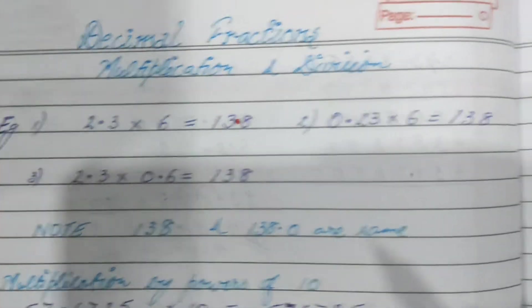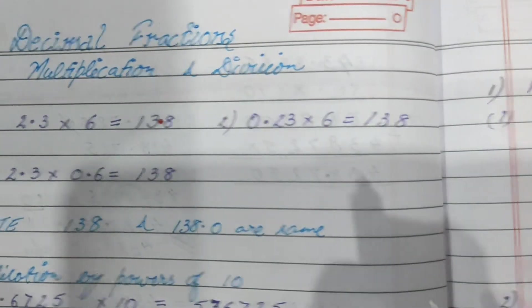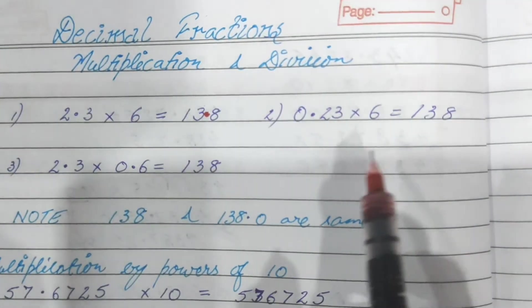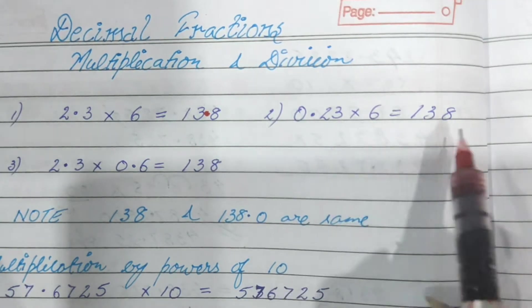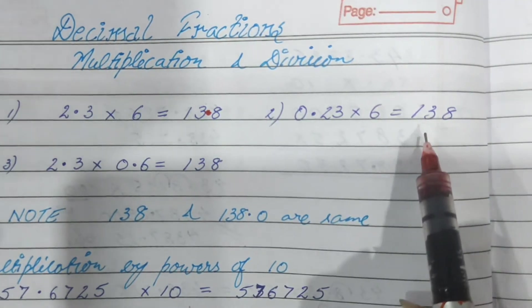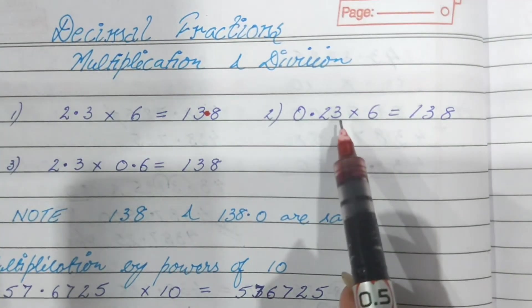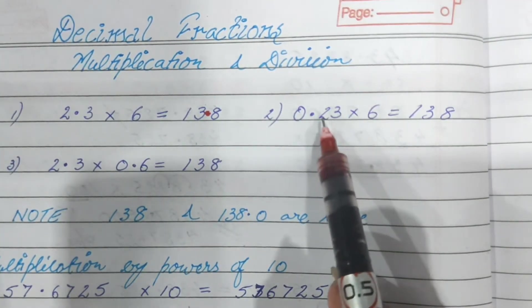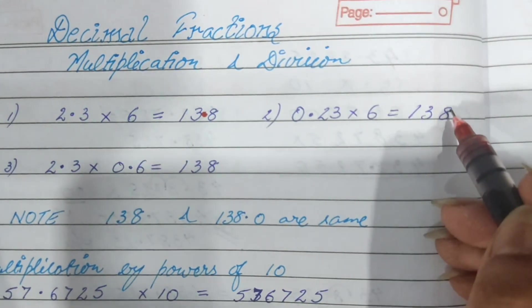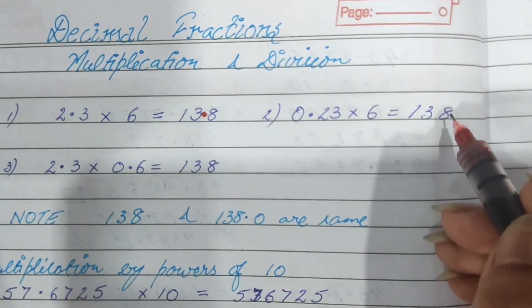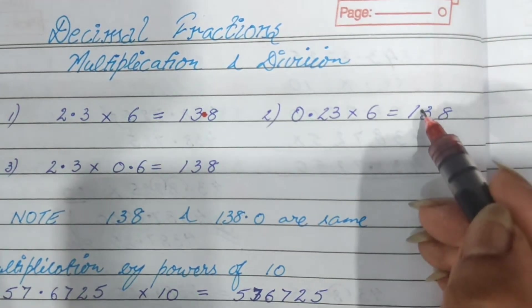The next one is done in the same way. I have taken 0.23 into 6. The answer remains the same. After how many places do we put the decimal? 1, 2. So in the answer you count 2 places from the units place and put the decimal.